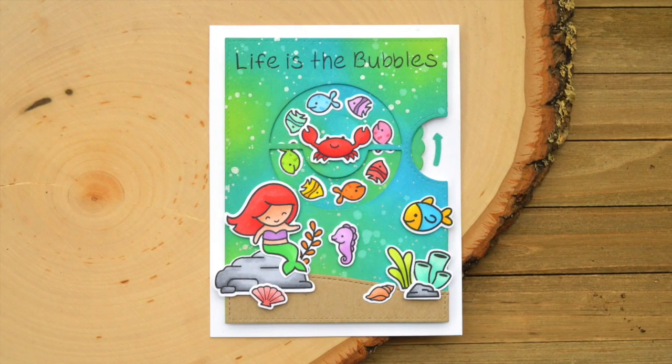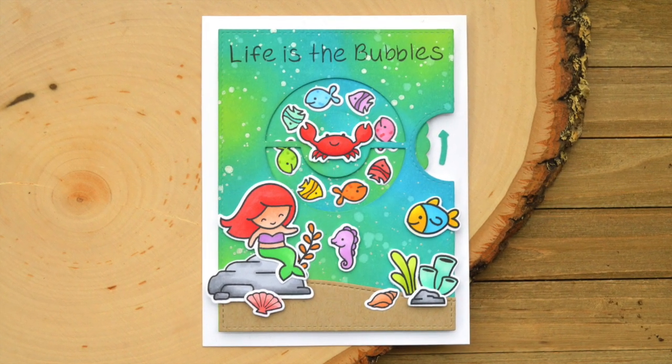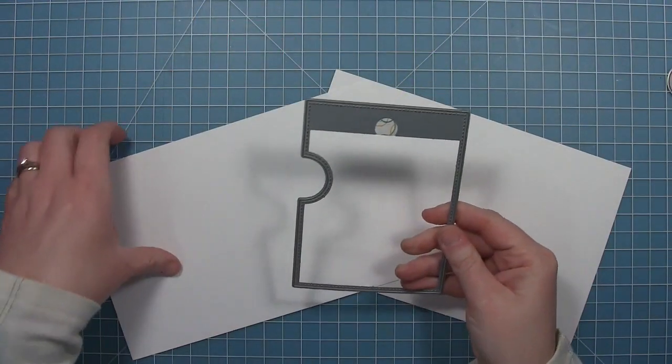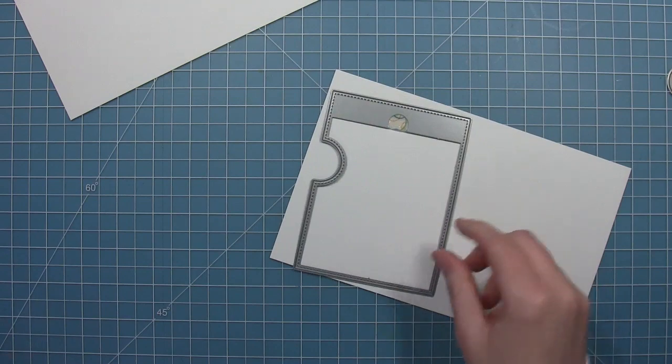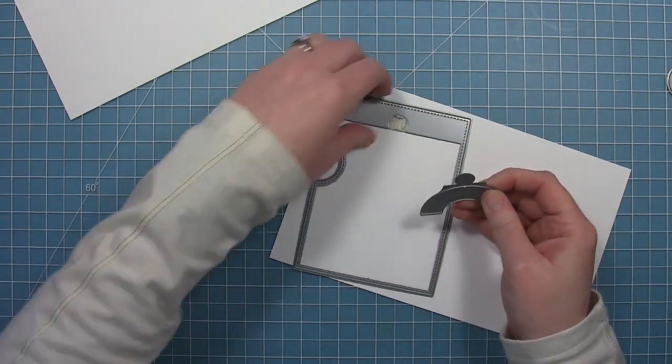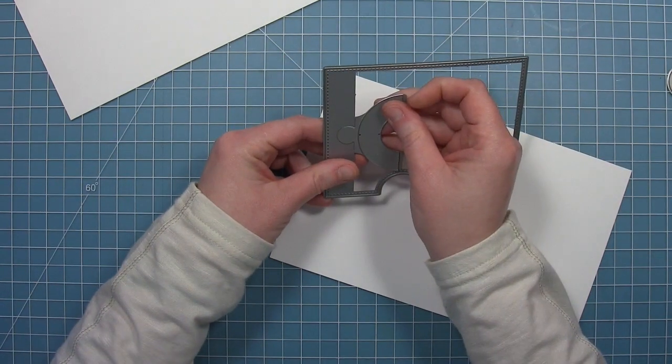Hello, it's Shari here today, and I am going to be showing you how I made this Little Mermaid themed reveal wheel card. The first thing I'm going to do is cut the front panel of my reveal wheel, and I'm going to be using the new semi-circle add-on for this card. This will allow me to create a full circle.